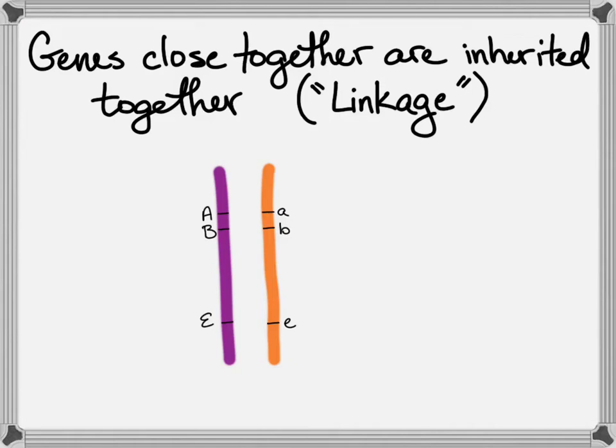Today I want to spend a little time talking about gene linkage, meaning genes that are likely to be inherited together. As you see here, A and B are more likely to be inherited together than A and E or B and E.